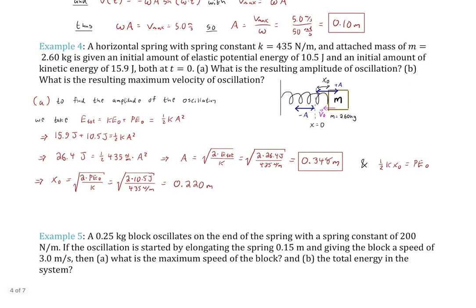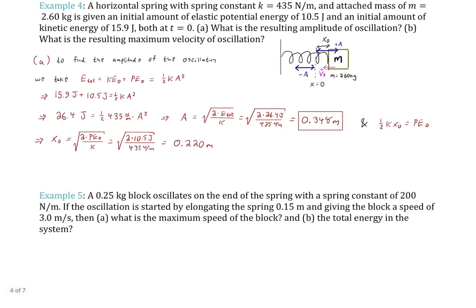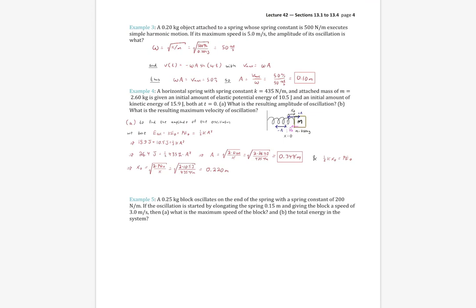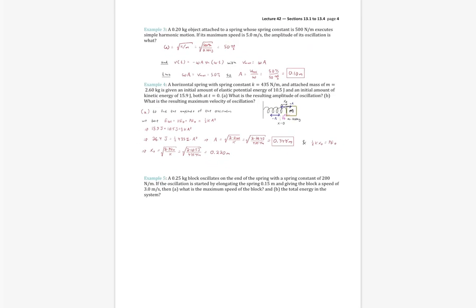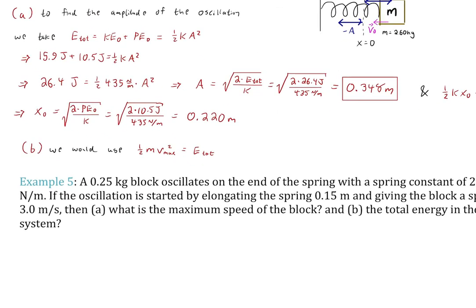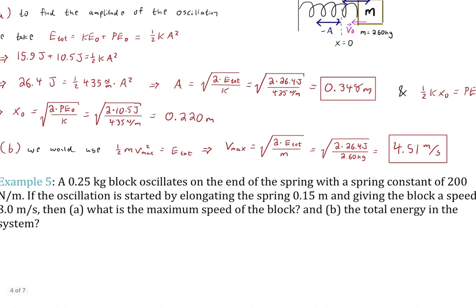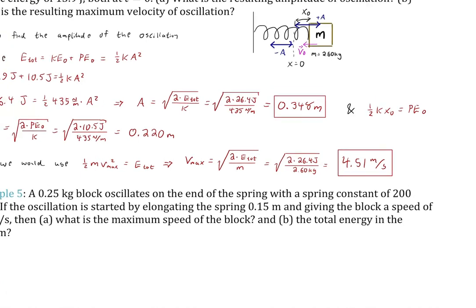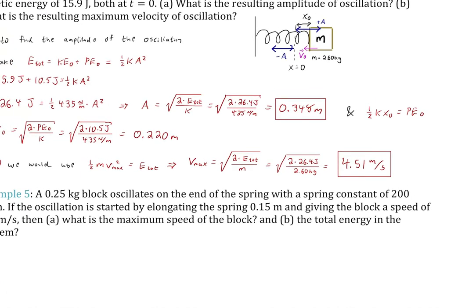For Part B of Example 4, find the maximum velocity. Using E_total = (1/2)mV_max², solve for V_max: V_max = √(2 × E_total / m) = 4.51 m/s. That's the velocity when all energy is kinetic at equilibrium. This was very much an energy approach, but in the context of oscillators.